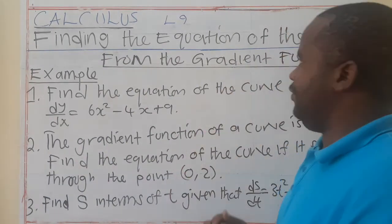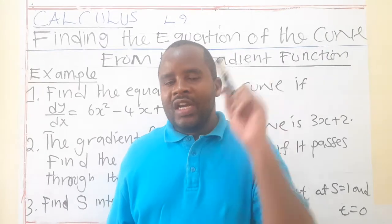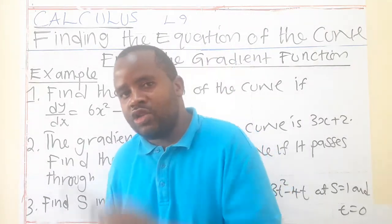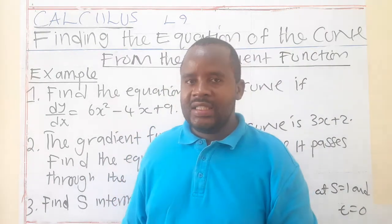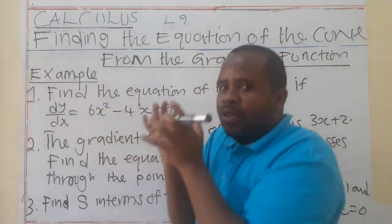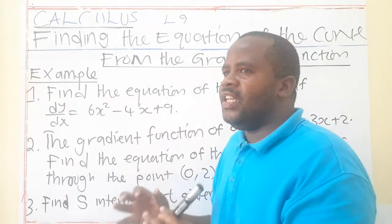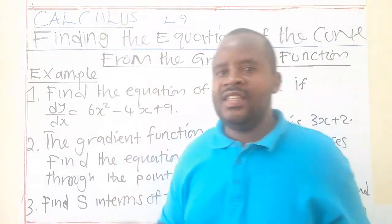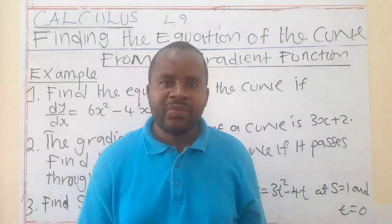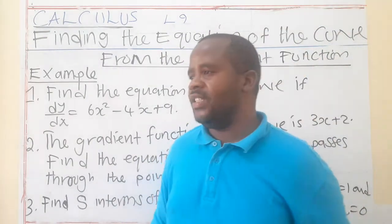If you have the gradient of a curve, you have to generate or come up with an equation of that curve. In order to find the equation of the curve, the first thing you must do is integrate that gradient function. Because the gradient function comes from an original curve — when you differentiate a function, you get the gradient function. So by integrating, you are reversing, going back to the original function.